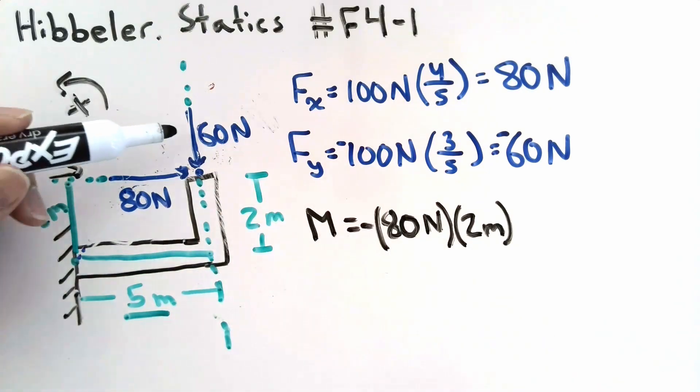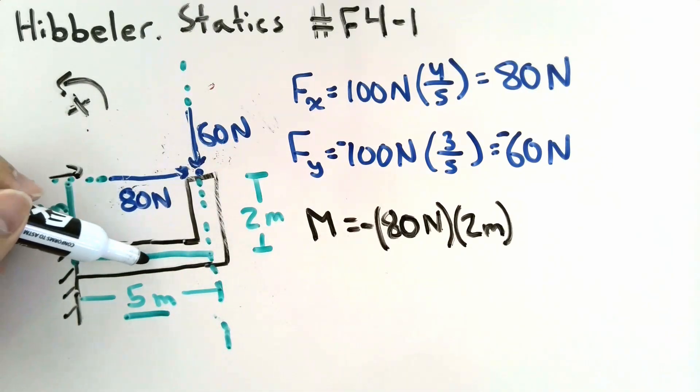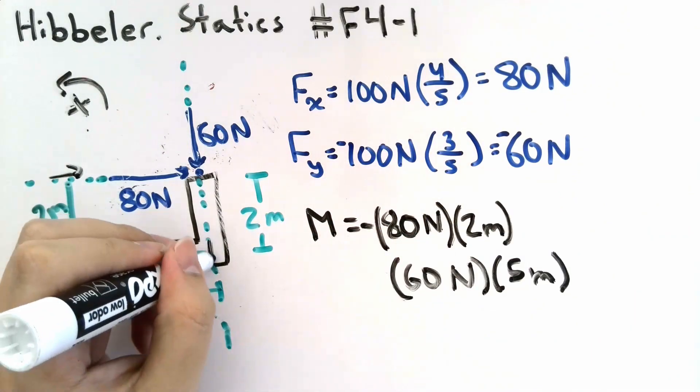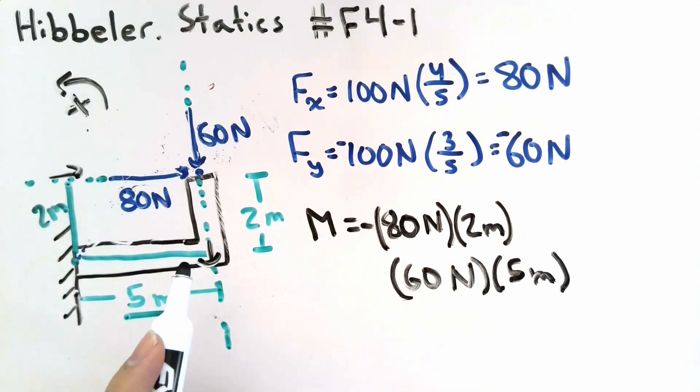We also have a 60 N force acting at a distance of 5 meters from my point. Again, this force causes a clockwise moment, which means we will have a negative moment sign.